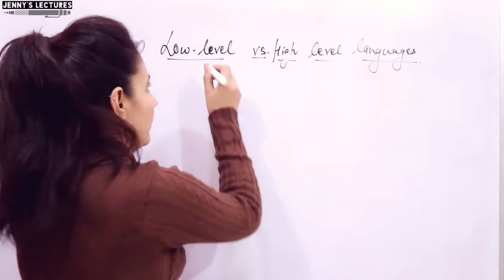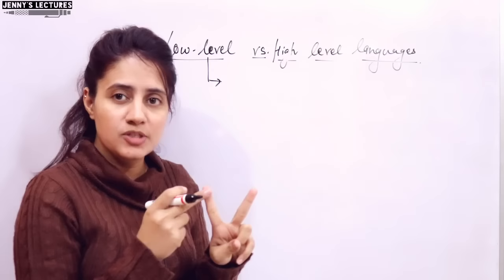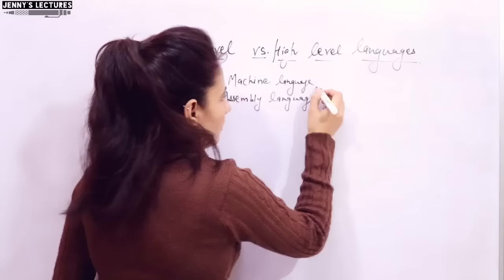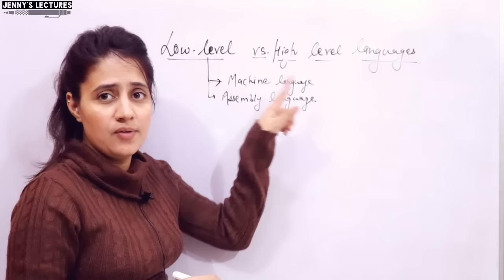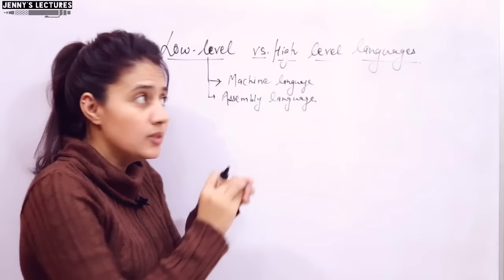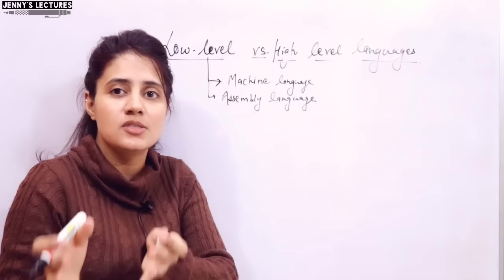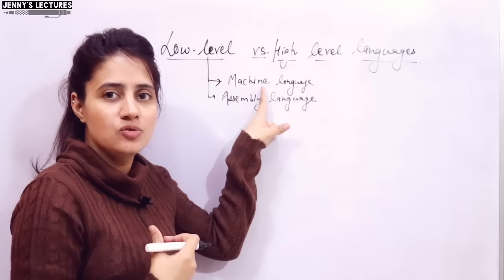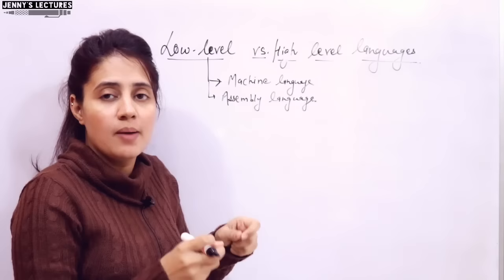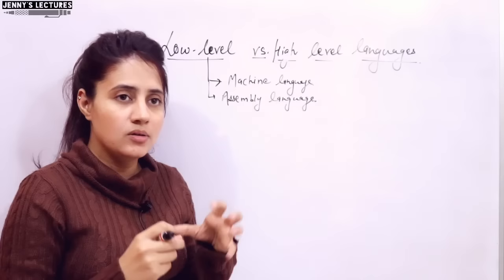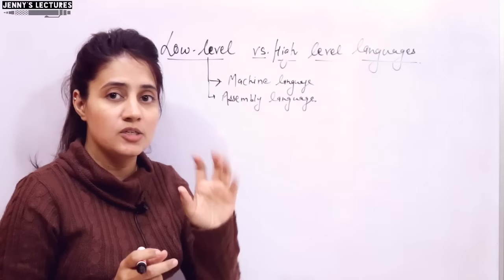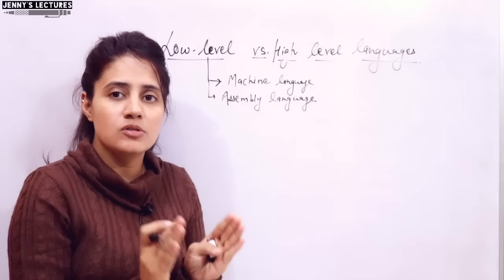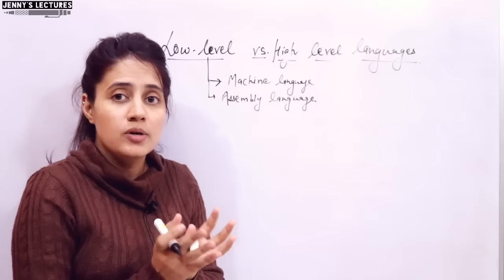In low-level languages, there are two languages: machine language and assembly language. Machine language is also called machine-level language or machine code. It is machine-oriented and very close to hardware, which is why it is called low-level. To write a program in machine language, you need extensive knowledge of the configuration and system architecture — the CPU architecture — because the processor is responsible for executing tasks.